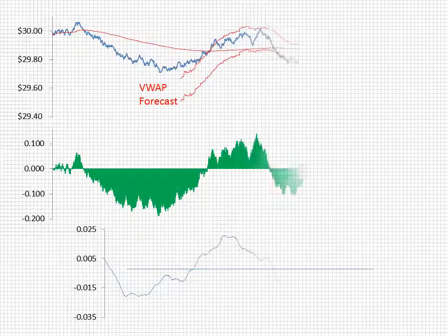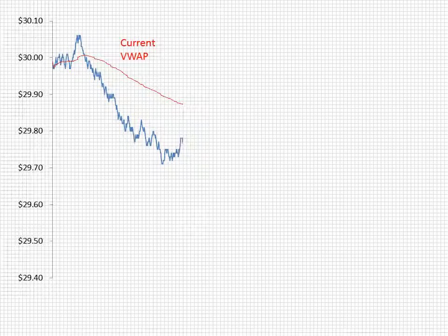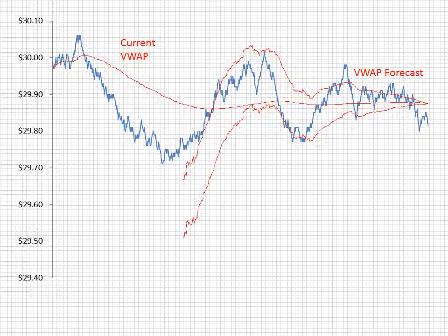Here's the dashboard for the alpha VWAP. We see the VWAP forecast in the top chart that gives a trader a range for the final VWAP and is updated in real-time based on changing market conditions. The current VWAP is used as a proxy for the VWAP forecast until an accurate final VWAP forecast is available.